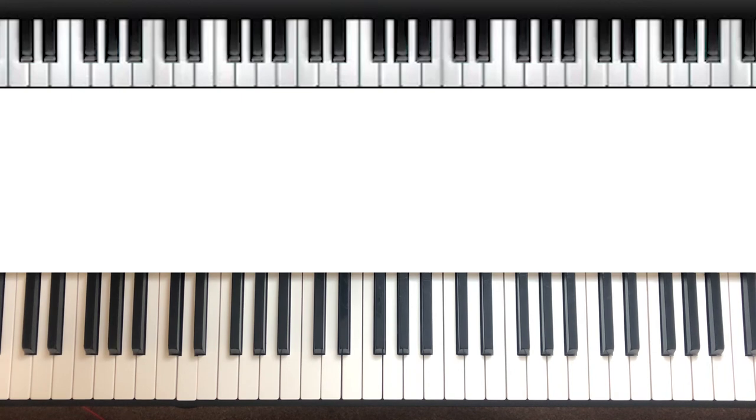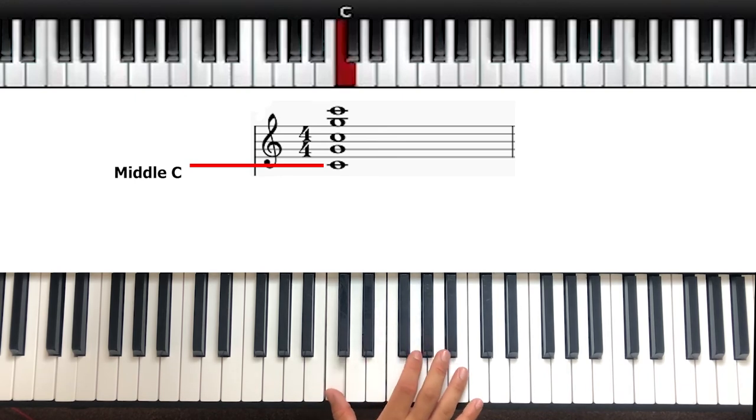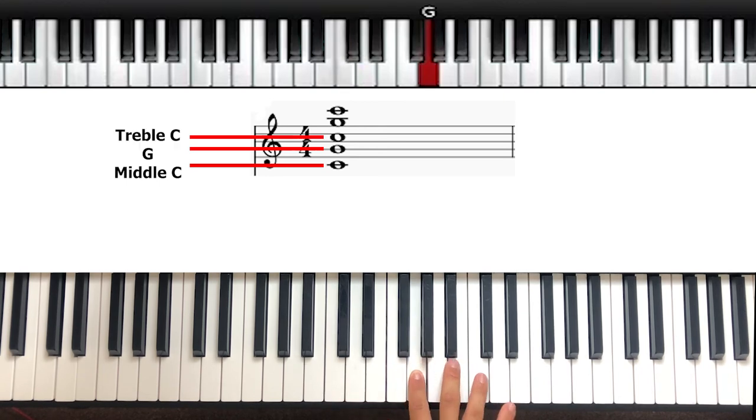Another tip that can help is by using landmarks, which guide you through the stave. Start with middle C. Then as you go up through the treble clef, you can mark out G, which is on the second line, treble C, which is on the third space,